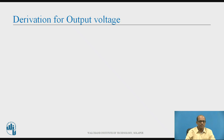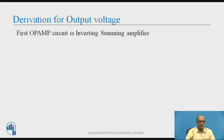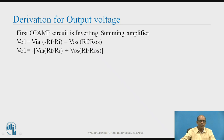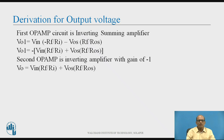Derivation for output voltage: the first operational amplifier is an inverting summing amplifier. Therefore, V-o1 is given by: V-o1 = −(V-in · Rf/Ri + V-os · Rf/Ros). Taking the minus sign outside, V-o1 = −(V-in + V-os · Rf/Ros). The second op-amp is the inverting amplifier with gain of minus 1. Therefore, V-ob = V-in + V-os · Rf/Ros.